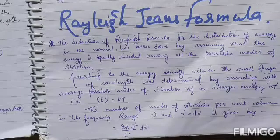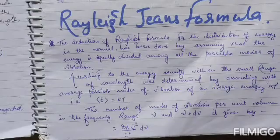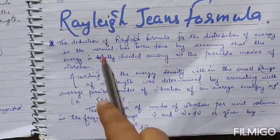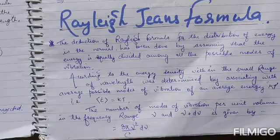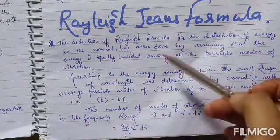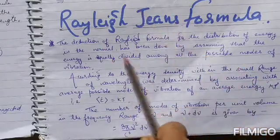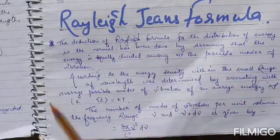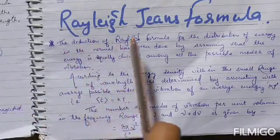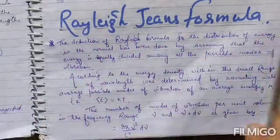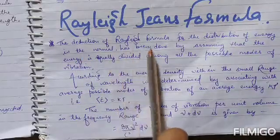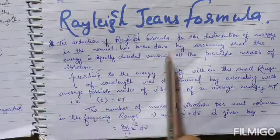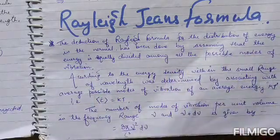To derive Rayleigh's formula, what did they do? They assumed that energy is equally divided among all modes of vibration. The deduction of Rayleigh formula for the distribution of energy has been done by assuming that energy is equally divided among all the possible modes of vibration.